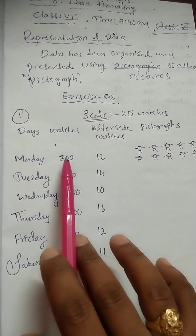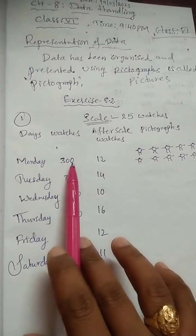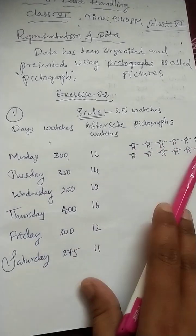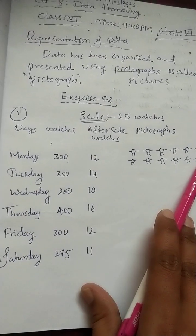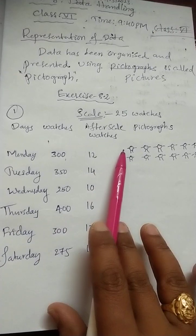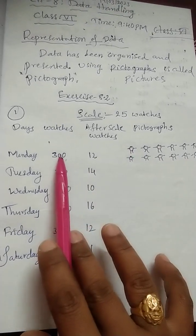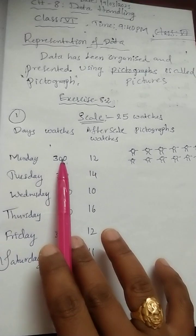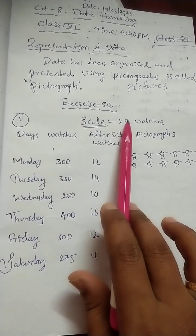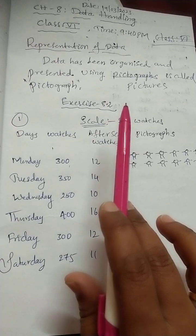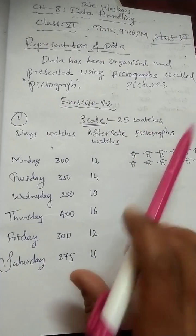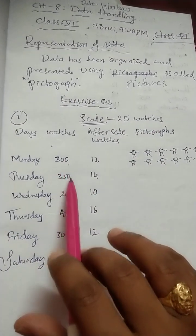Before using a scale, we have the number 300. Can we draw 300 wristwatch pictures individually? Drawing each wristwatch would take a very long time. That is why we use a scale. With a scale of 25, meaning each symbol represents 25 watches, we can divide the numbers and reduce them.